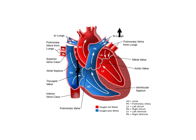Oxygenated blood returns to the left atrium through the pulmonary veins. And from the left atrium, it passes to the left ventricle, from where it is pumped to all over the body, passing out via the aorta.